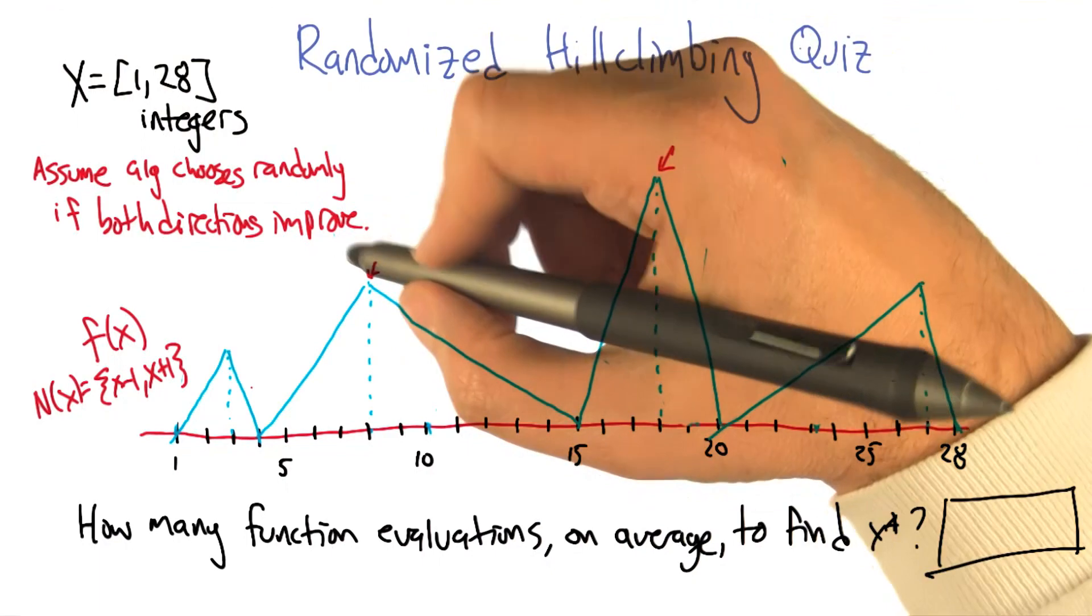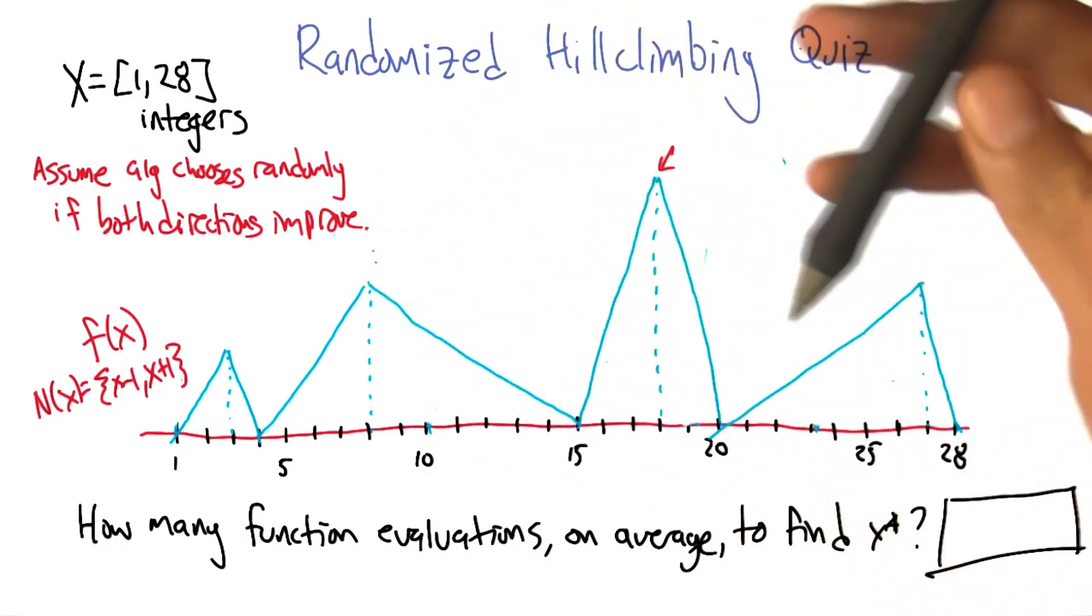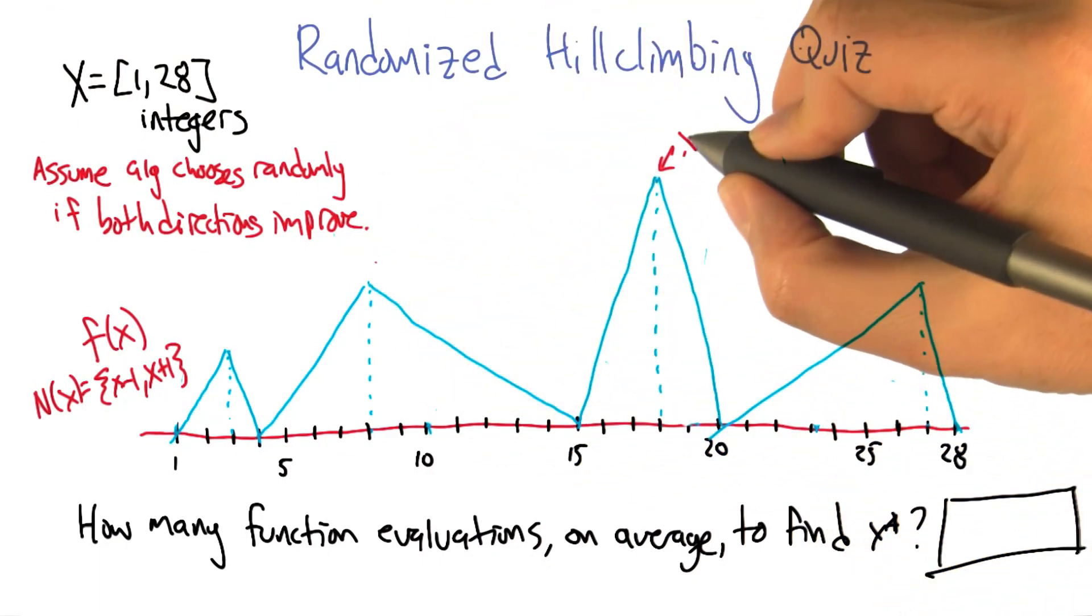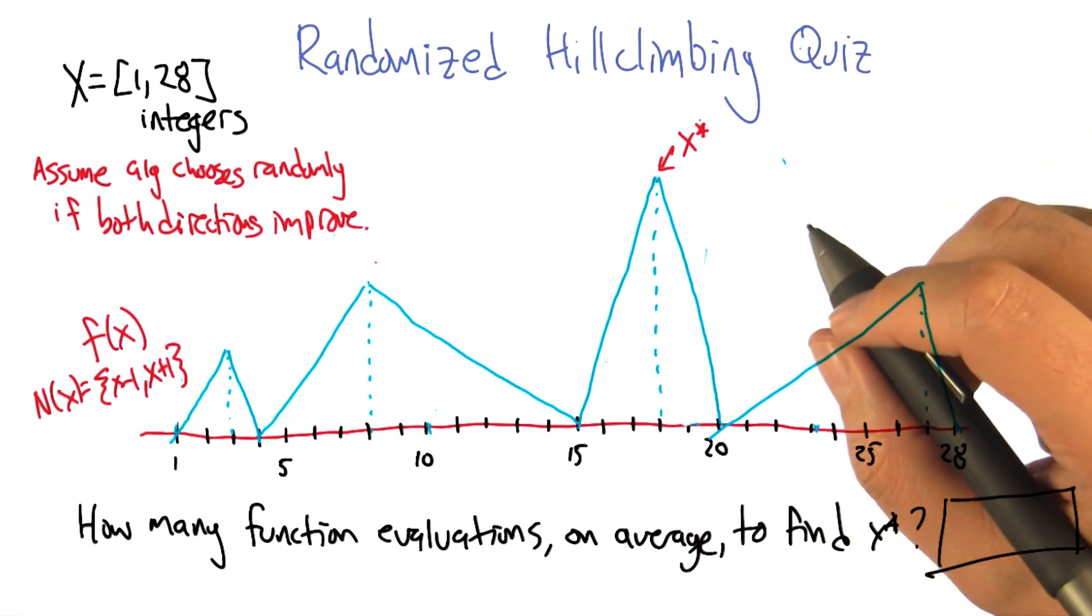And now the question is how many function evaluations, on average, is it going to take to find X star, the tippy top of this peak?